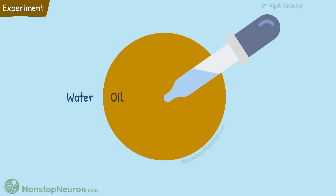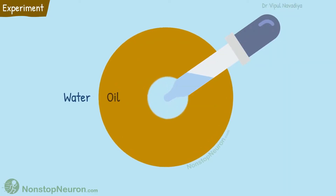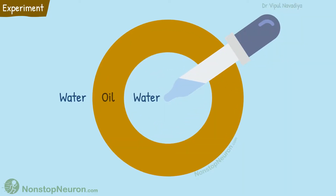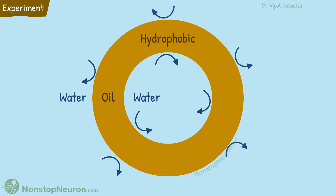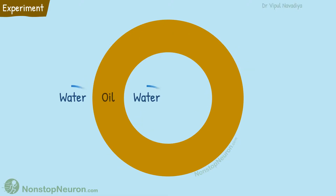Now let's take a dropper and put water inside this sphere. This water will stay inside the sphere of the oil. As the oil is hydrophobic, it won't allow the passage of water. So inside water stays inside and outside water stays outside. Thus, the oil has created two separate water compartments.